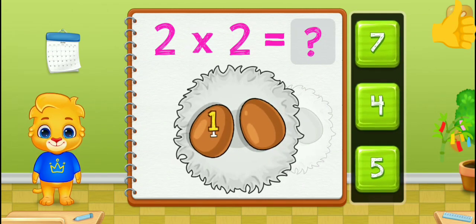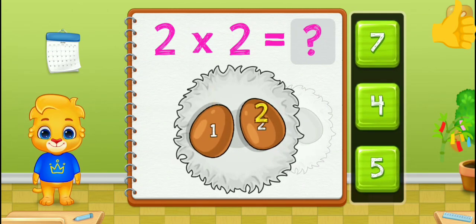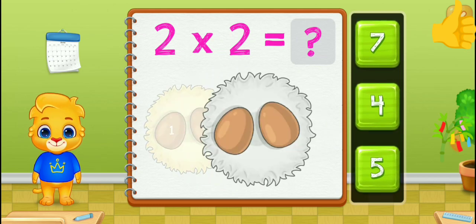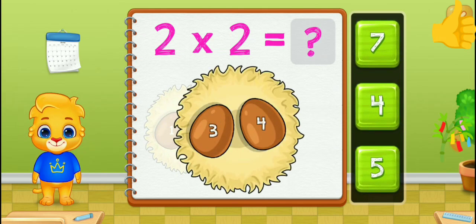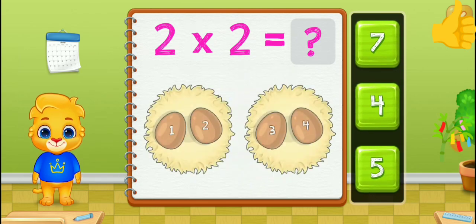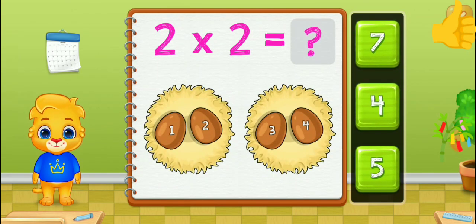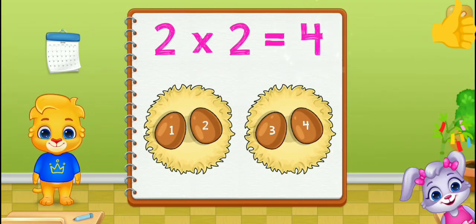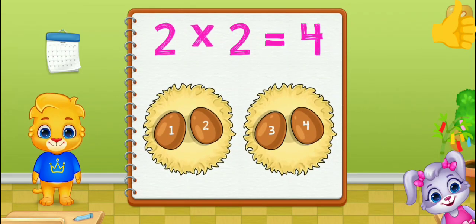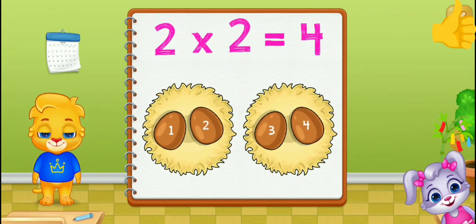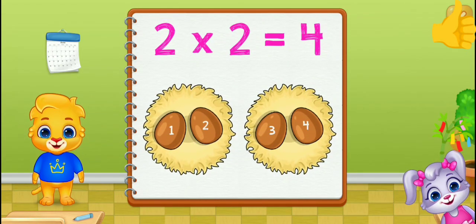One, two, three, four. Two times two equals four.